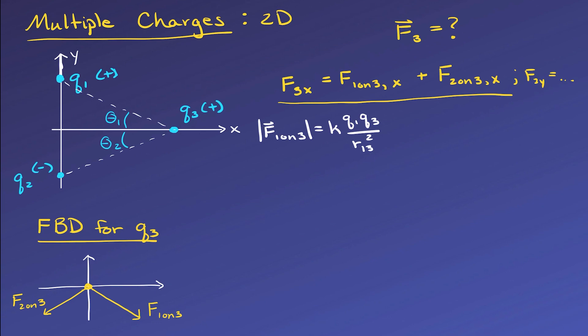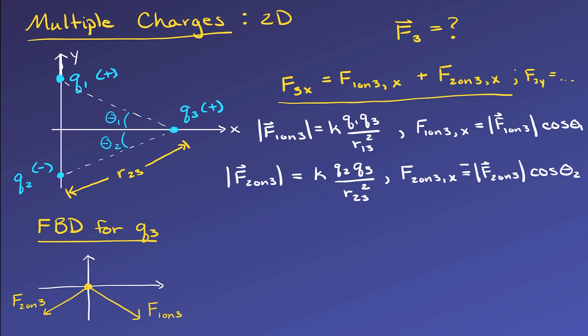Then to get the x component, we can use cosine of the angle I've drawn, since the x component is the adjacent side of this right triangle formed by the two charges. F1 on 3x will be positive, since it is to the right. And we can do the same for F2 on 3, but its x component will be negative, since it's to the left. Again, we cannot forget to put in the negative sign, otherwise we will get the wrong answer.